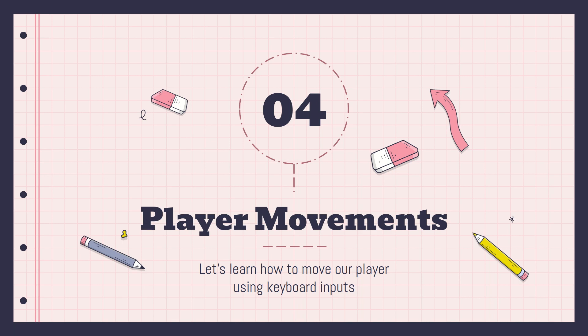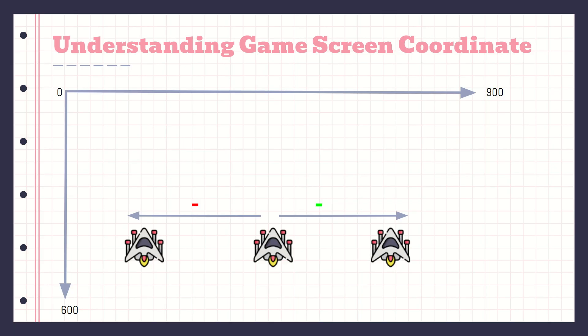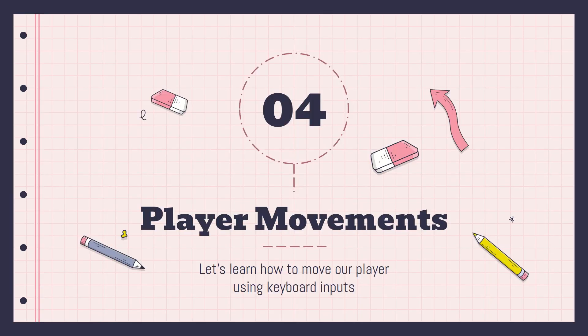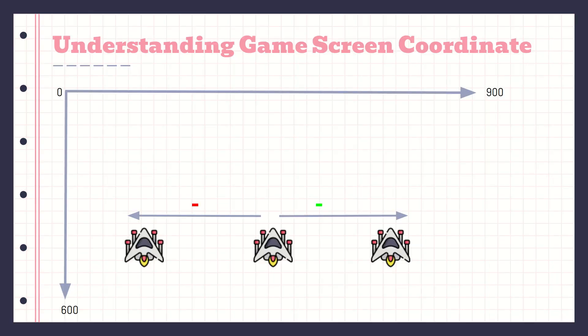Enough of the long introduction — let's look at what we're trying to do. We're going to look at how to move the player around. When I press the left arrow key the player should move to the left, and when I press the right arrow key the player should move to the right. Right now our player image is just static and doesn't respond to anything.